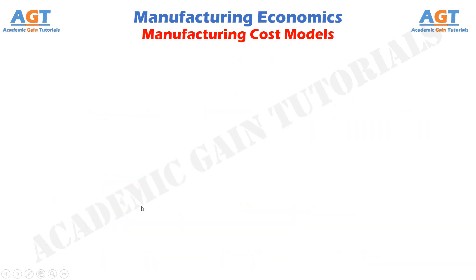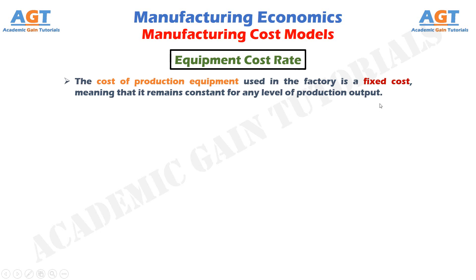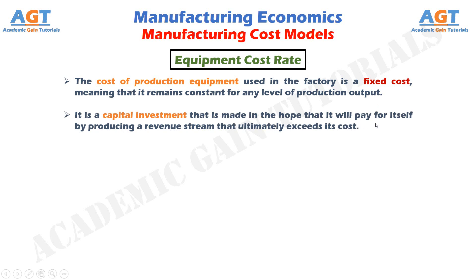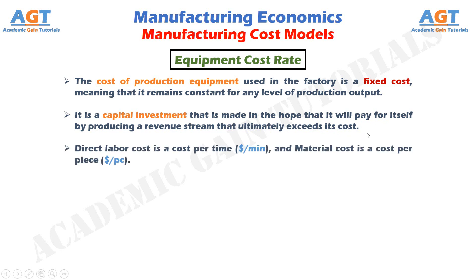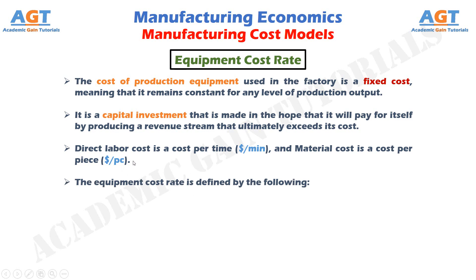Equipment cost rate. The cost of production equipment used in the factory is a fixed cost, meaning it remains constant for any level of production output. It is a capital investment made in the hope that it will pay for itself by producing a revenue stream that ultimately exceeds its cost. The company puts up the money to purchase the equipment as an initial cost, and then the equipment pays back over a certain number of years until it is replaced or disposed of. This is different from direct labor and material costs, which are variable costs, meaning they are paid for as they are used. Direct labor cost is expressed in dollars per minute, and material cost is expressed in dollars per piece. In order to determine an equipment cost rate, the initial cost plus installation cost of the equipment must be amortized over the number of minutes it is used during its lifetime.